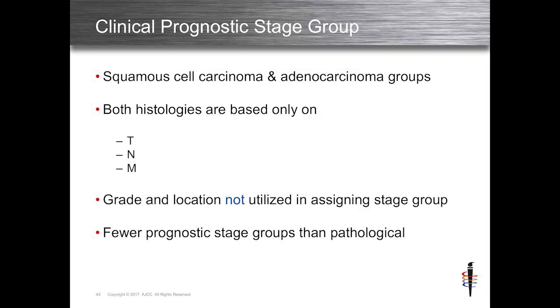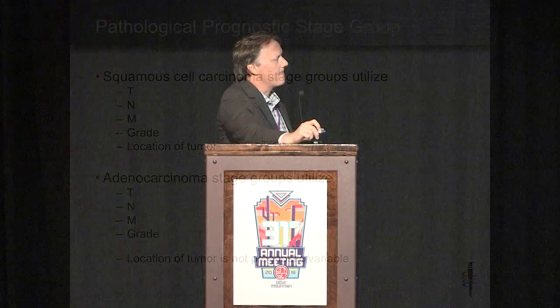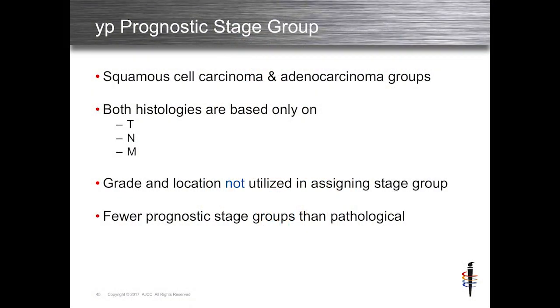From a standpoint of clinical prognostic stage groupings, the histologies are based on TNM. Even though in the pathologic staging system from the 7th edition grade and location played a large role — which was very confusing — you don't need to remember that when seeing patients in clinic. It's just straight TNM. Grade and location are only used in the pathologic staging system, true for both squamous and adeno — though location is not used for adeno. For YP stage groups, the YP TNM for squamous and adenocarcinoma are the same — they almost overlap — so we use one shared YP staging system.